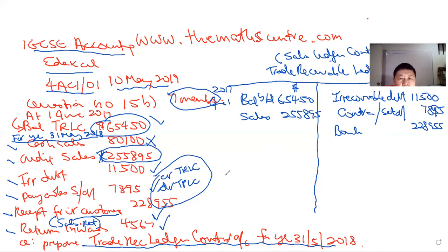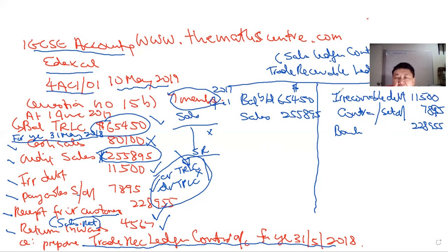Return inwards: when you make a sale it's a credit; a sales return reverses that, so it's a debit. When a customer returns goods inwards, this reduces the amount they owe, so it goes on the credit side of the TRLC. Write 'sales returns' or 'return inwards': 4,567.